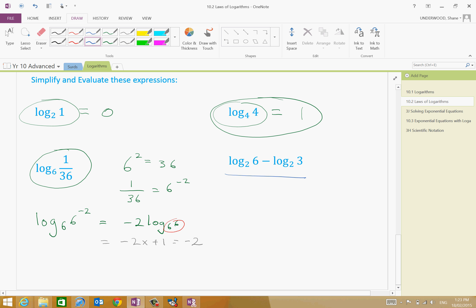And this one, we can say that log to the base 2 of 6 divided by 3 which is equal to log to the base 2 of 6 divided by 3 is 2. Now, what does that evaluate to be equal to? Log to the base 2 of 2 is equal to 1. Thank you.